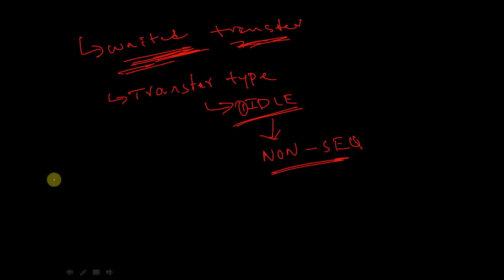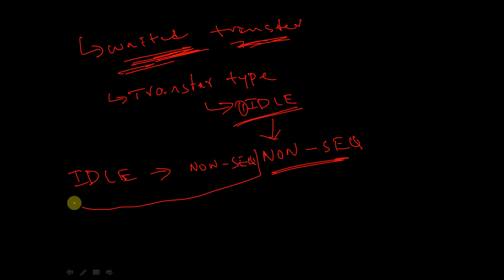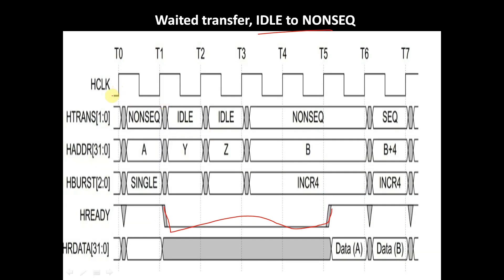This is the first condition: even during wait states, the master is allowed to change the transfer type from idle to non-sequential. In clock cycle T1 to T2, the slave is inserting HREADY low — the slave is not ready and the transfer type is idle. In T2 to T3 it is also idle. But in T3 to T6, it changes from idle to non-sequential even though HREADY is low. Once changed to non-sequential, it is not allowed to change to any other transfer type while HREADY is low.